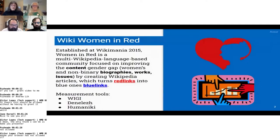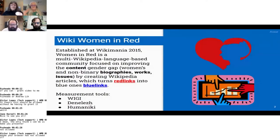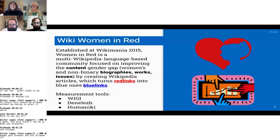Roger Bamkin and I, the co-founders, were of the same mindset when planning Women in Red. We needed a tool to measure the community's output. Are we going to actually move the needle? Are we going to actually make change? We knew we had to rely on Wikidata tools for that.